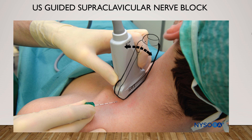This shows the probe placement for a supraclavicular nerve block. You can see the probe is parallel to the clavicle, and we angle it to look under the clavicle, because that is the easiest spot to reach the nerve and achieve reliable analgesia.